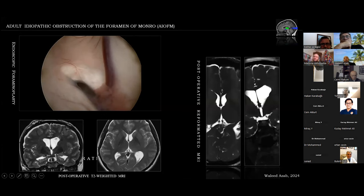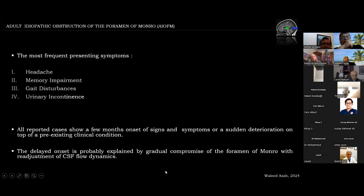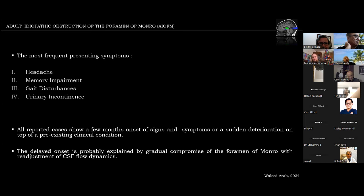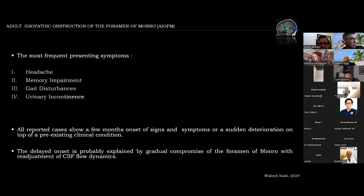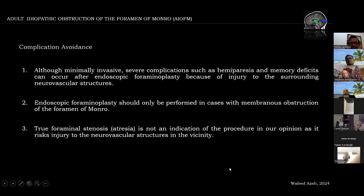Here is the view of the completely open foramen of Monro. Post-operative MRIs show normalization of ventricular size and disappearance of the membranous structures. The most frequent presenting symptoms in these patients include headache, memory impairment, gait disturbances, and urinary incontinence. All cases show a few months onset of signs and symptoms or sudden deterioration on top of a pre-existing condition. As of 2020, 16 cases have been reported in the literature. Our case should be regarded as the fourth case of bilateral membranous occlusion.